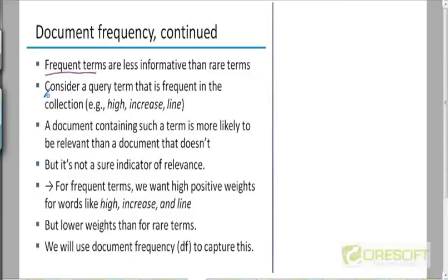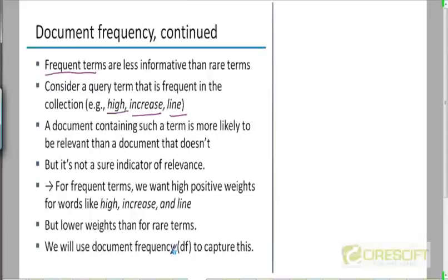Suppose there's a query term that is frequent in the collection — terms like 'high', 'increase', 'line'. These are relatively common words, just like stop words, compared to rare terms like 'arachnocentric'. If there's a document which contains a frequent term, that is more likely to be relevant than a document which does not. But a common query term appearing in a document is not as important as a rare query term appearing in the document.